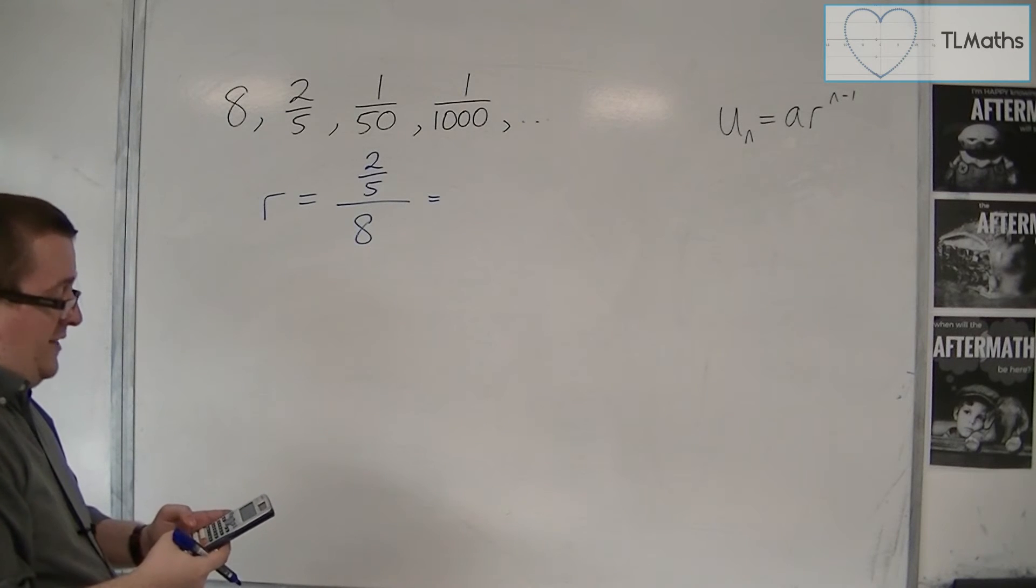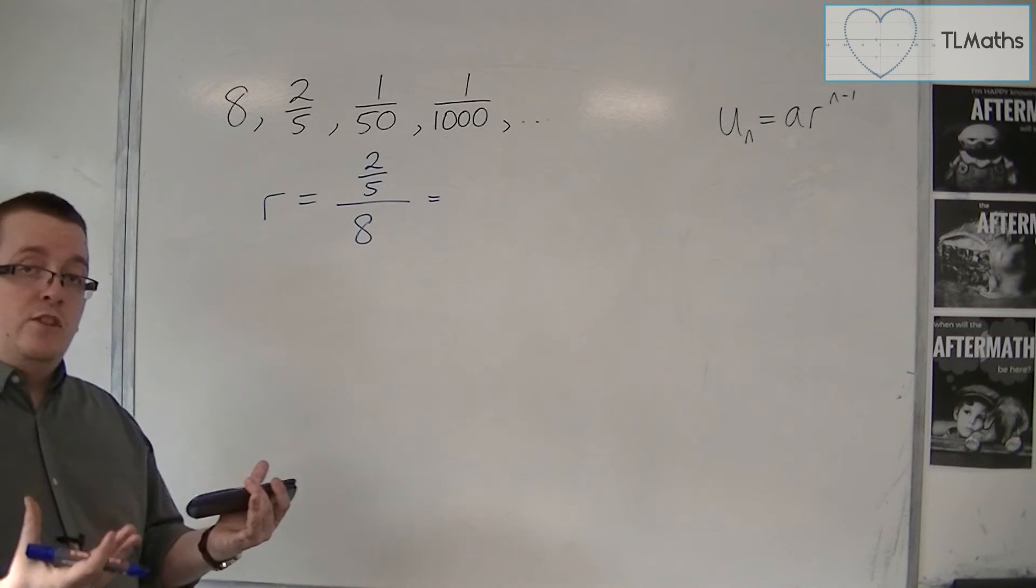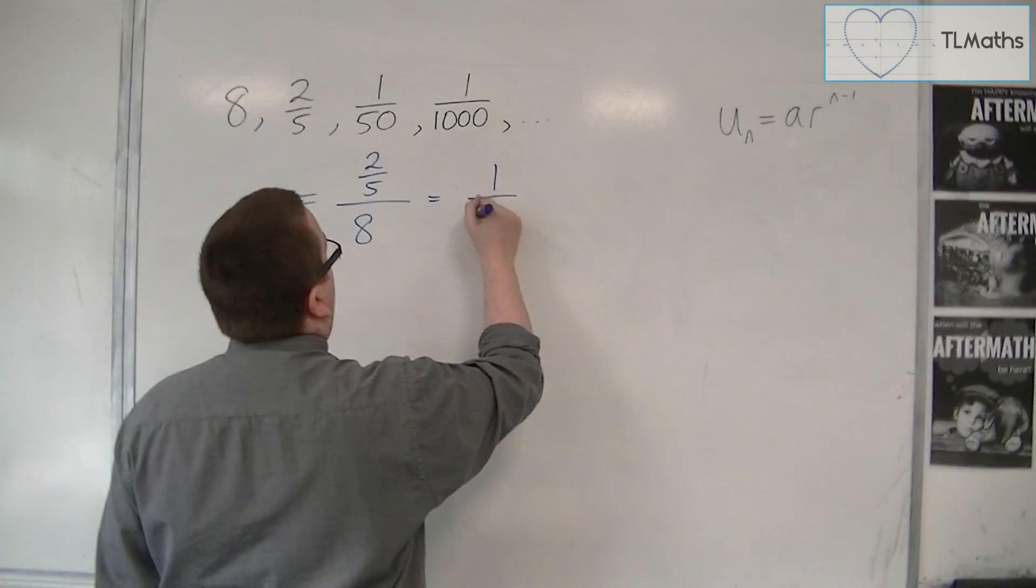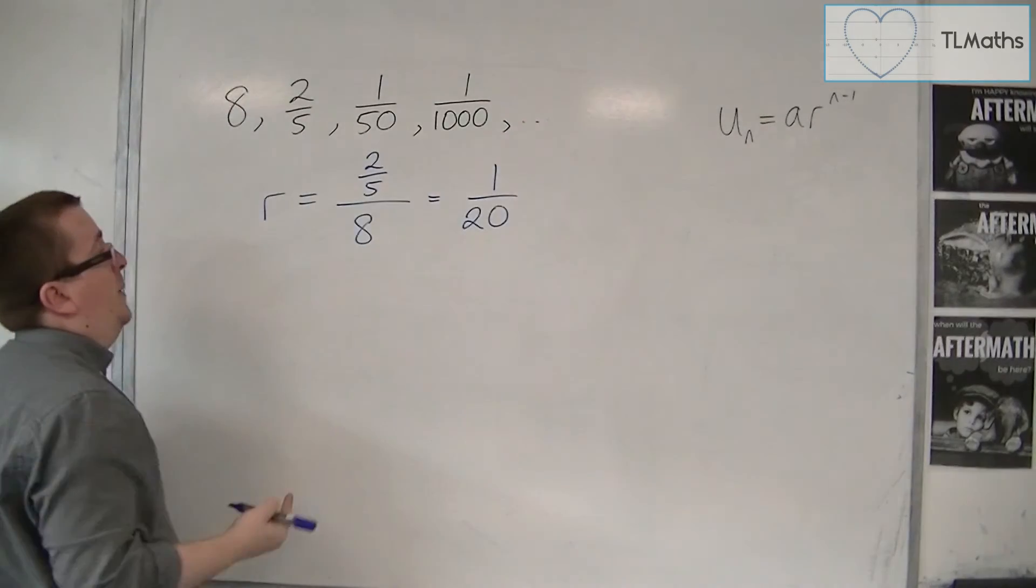So 2 fifths divided by 8 gets us 1 over 20. So I'm multiplying by 1 over 20 each time.